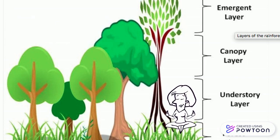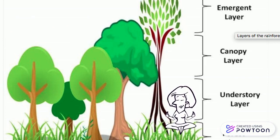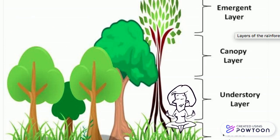The tropical rainforests are composed of stratified layers, where different types of plants and animals with different adaptations coexist together to thrive. The stratification of the tropical rainforest is composed of the forest floor, the understory layer, the canopy layer, and the emergent layer.